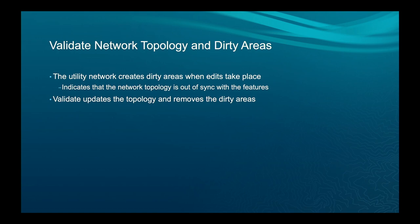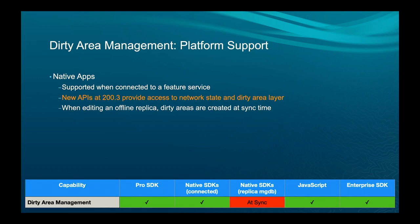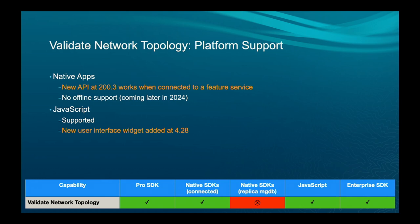Validating topology and dirty areas: when you make an edit, it creates a dirty area, indicating to the system that the network topology is out of sync with the features. Validate goes and cleans it all up. For dirty area management on the native apps side, it works when connected to a feature service. At release 200.3 from December, we have new APIs to get access to the network state and the dirty area layer automatically. For offline replicas, dirty areas are created at sync time. For validate network topology, most platforms are supported. At native apps 200.3, when connected to a feature service, we now have a routine to validate the topology, with offline support coming later this year.